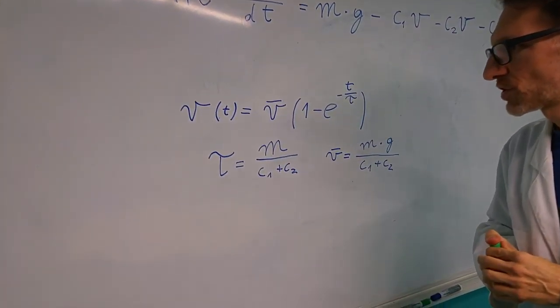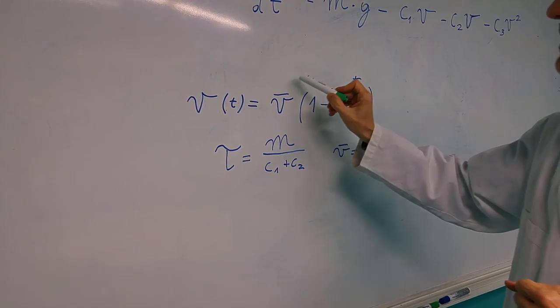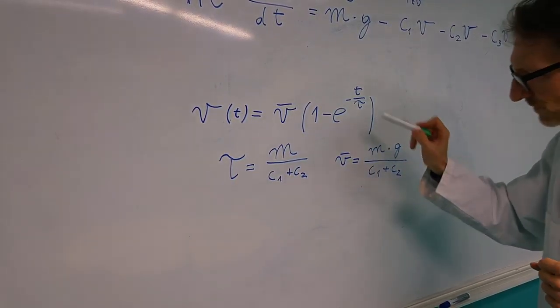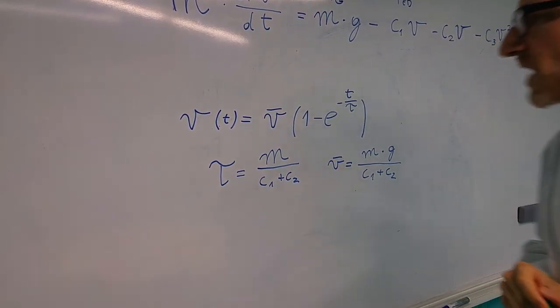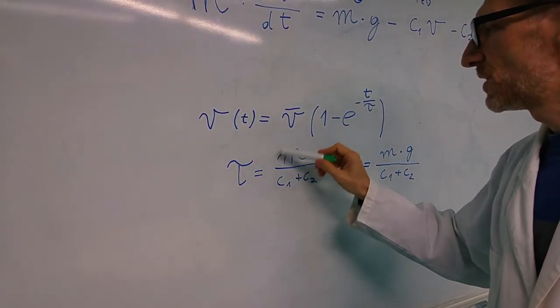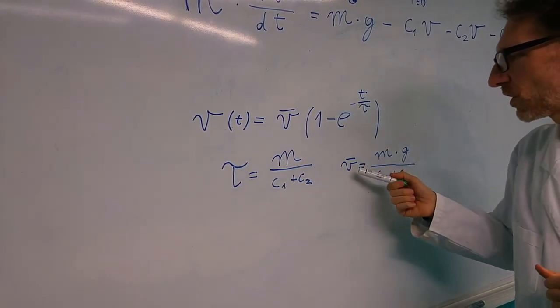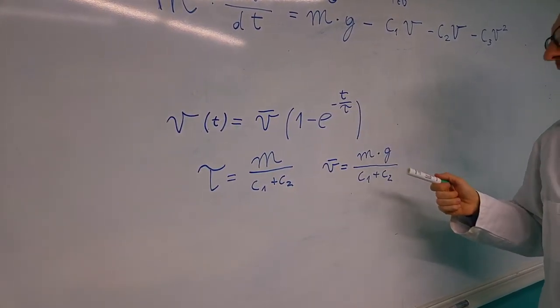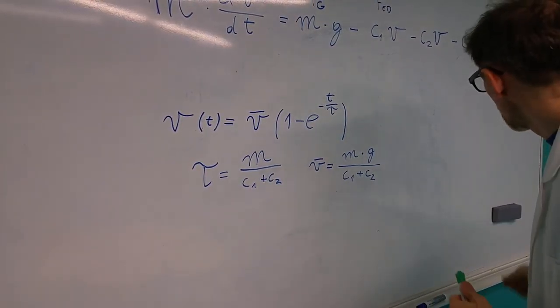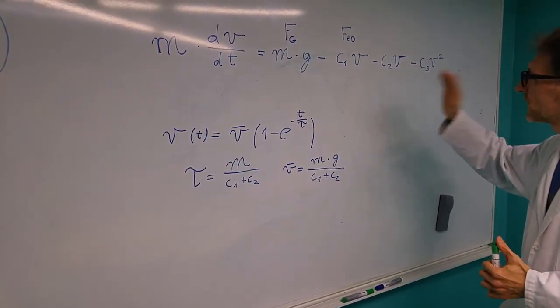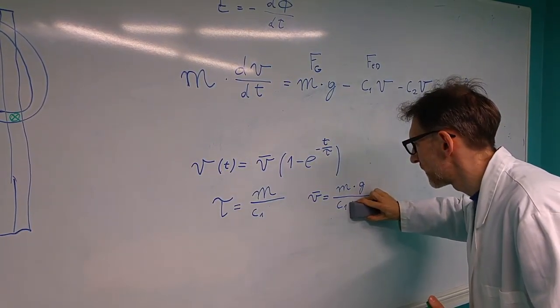So this is the solution of the differential equation. V as a function of time is equal to the terminal velocity times this factor. And we see that we have 1 minus e to the power of t divided by tau. Tau is the time constant of this system, and it's equal to the mass of the magnet divided by these two constants that we have here. Terminal velocity is basically this time constant multiplied by the gravitational constant. If we neglect the aerodynamic drag, then our time constant will be this, and the terminal velocity will be this.